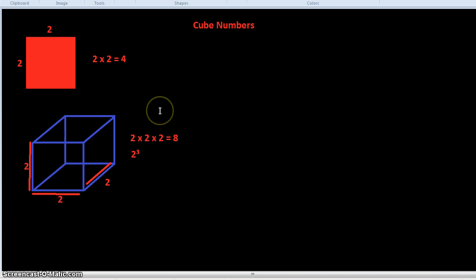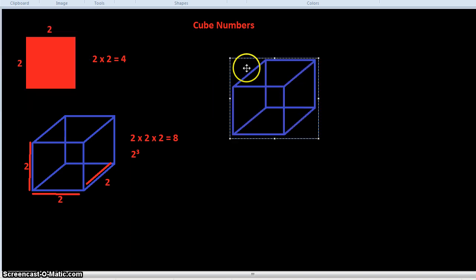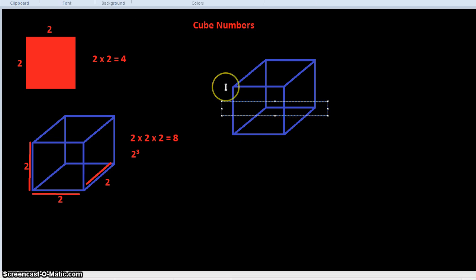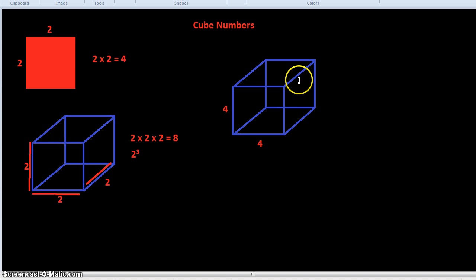So let's have another example. Another cube. This time a bigger cube. Now this cube has a height of 4, a width of 4, and a depth of 4. So in this case, it's 4 times 4 times 4, which equals 4 cubed.